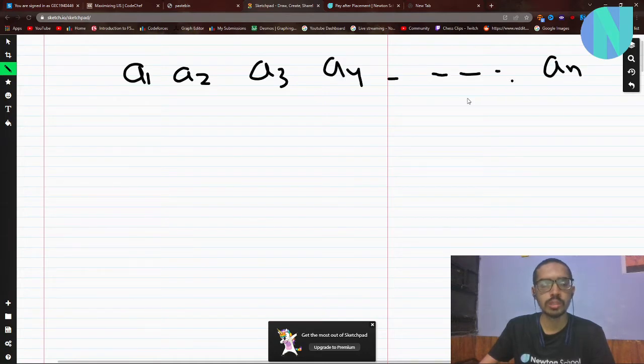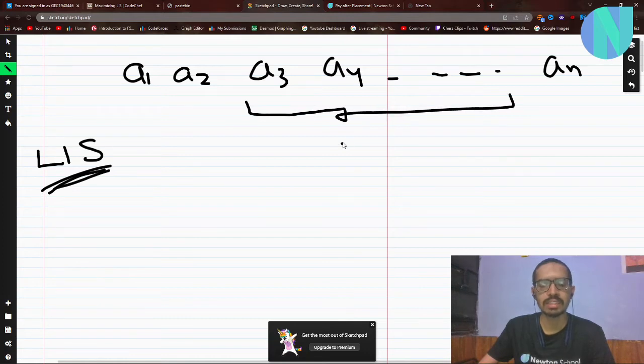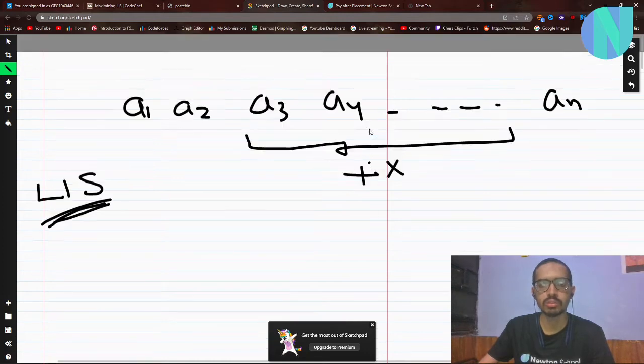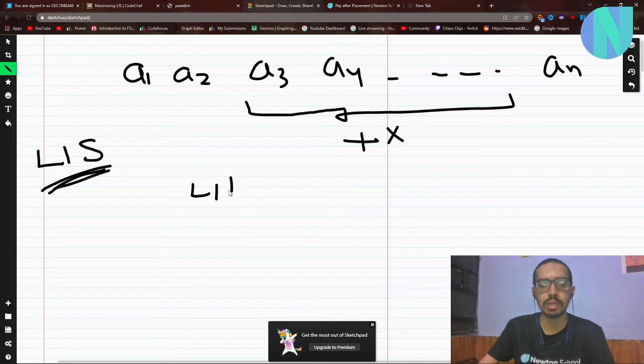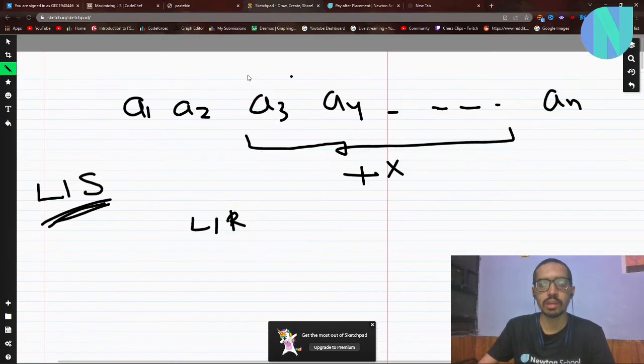We need to find the longest strictly increasing subsequence, but we can also apply an operation. We can choose some subarray from l to r and add some arbitrary integer x to that. So we can do a3 plus x, a4 plus x, and so on like this.